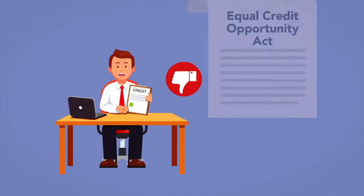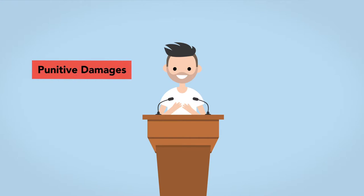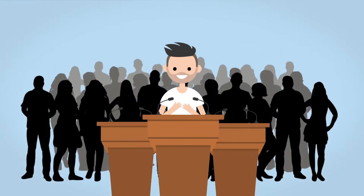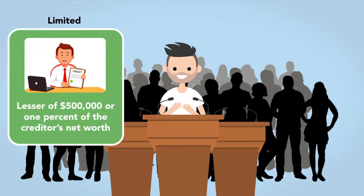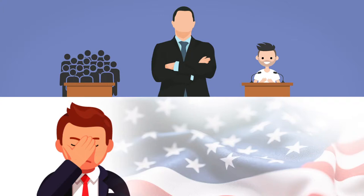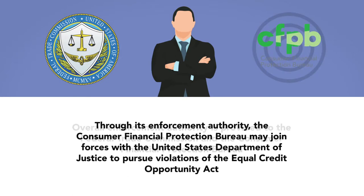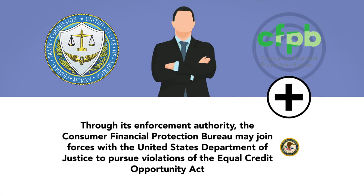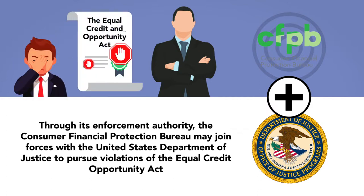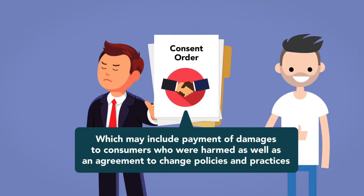A creditor that fails to comply with the Equal Credit Opportunity Act, or Regulation B, is subject to civil liability for actual and punitive damages, or can be subject to class action lawsuits. In the case of an individual plaintiff, punitive damages are available but limited to $10,000. In the case of a class action, damages are limited to the lesser of $500,000 or 1% of the creditor's net worth. Administrative enforcement of both acts is delegated to several federal administrative agencies, depending on the type of credit involved. Overall enforcement authority is provided to the Federal Trade Commission and the Consumer Financial Protection Bureau. Through its enforcement authority, the Consumer Financial Protection Bureau may join forces with the United States Department of Justice to pursue violations of the Equal Credit Opportunity Act. This often results in a consent order, agreed to by the lender to settle the action, which may include payment of damages to consumers who were harmed, as well as an agreement to change policies and practices.